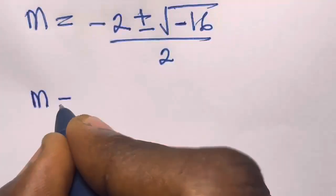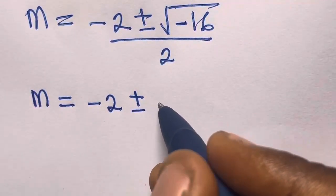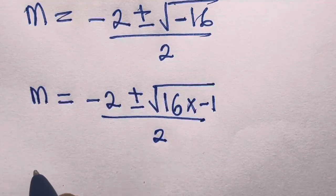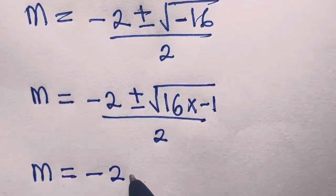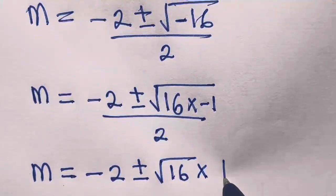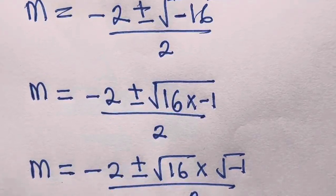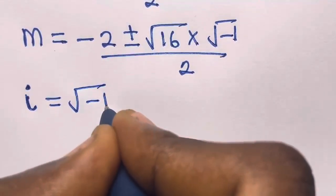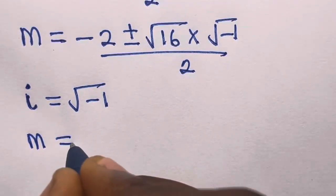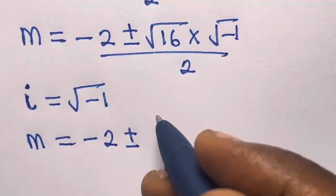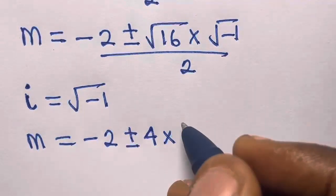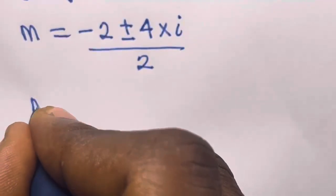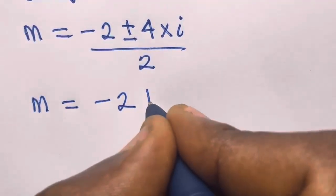We can write negative 16 as 16 times negative 1. So we have square root of 16 times square root of negative 1. Recalling from complex numbers that i equals square root of negative 1, the square root of 16 is 4, so this becomes negative 2 plus or minus 4i, divided by 2.